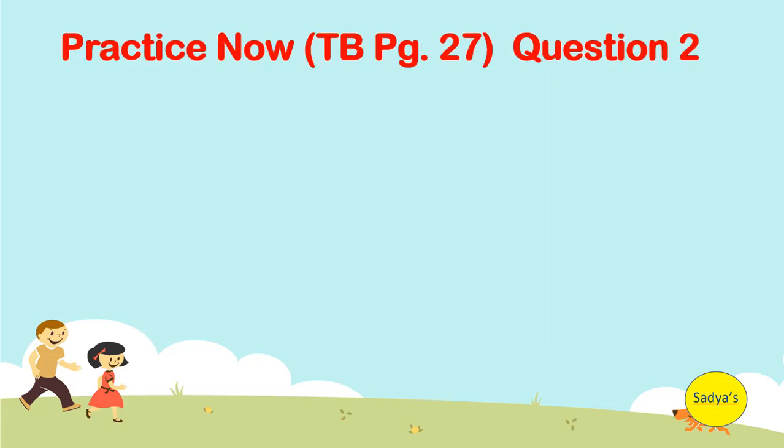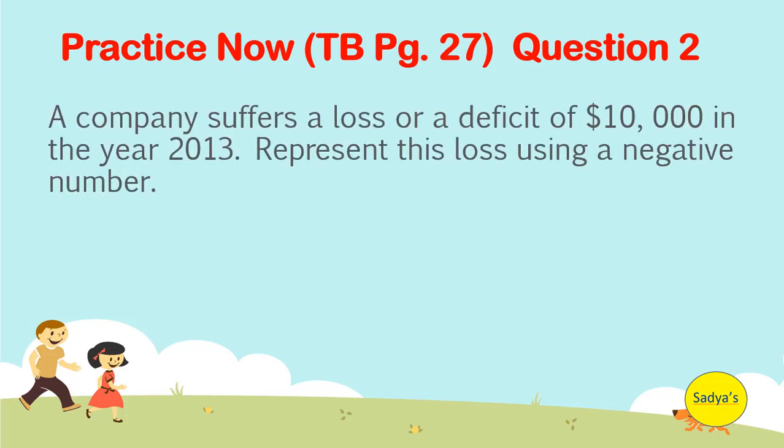Let's look at one part of question number 2 of practice now given on textbook page number 27. A company suffers a loss or a deficit of $10,000 in the year 2013. Represent this loss using a negative number. As we can see, the word loss or deficit is a negative word. So it can be mathematically written as negative $10,000. Now, try the remaining parts of the practice now yourself.